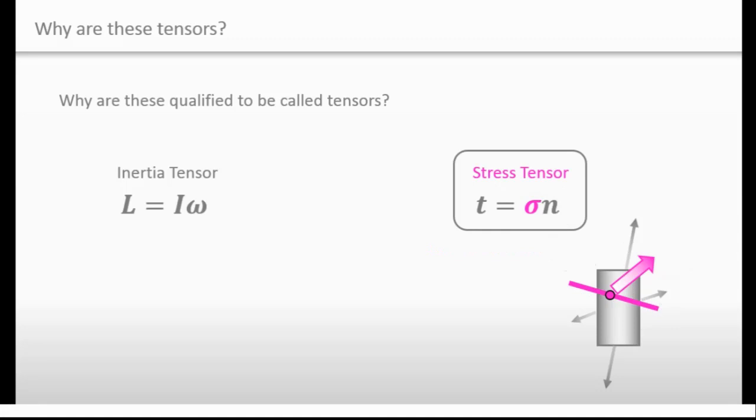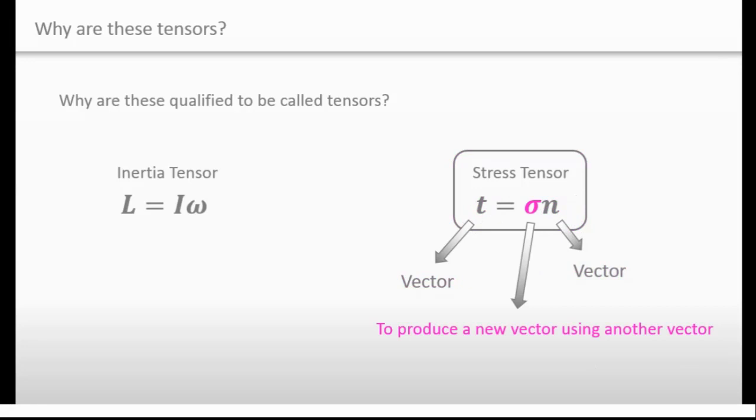Let's review what happened to this. These are vectors, right? That's why we can say that the significance of this is to produce a new vector using another vector.